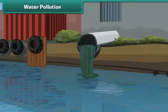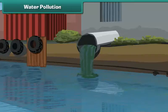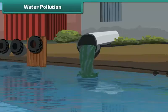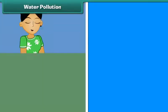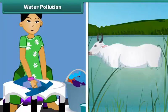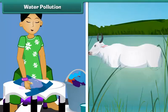Domestic and industrial sewage pollute water. Activities such as washing clothes and bathing animals in the rivers also cause water pollution.